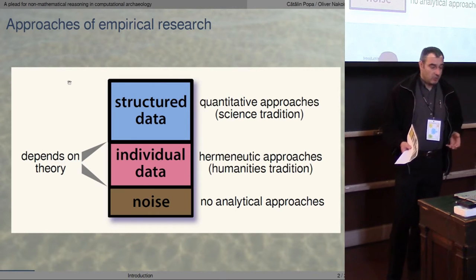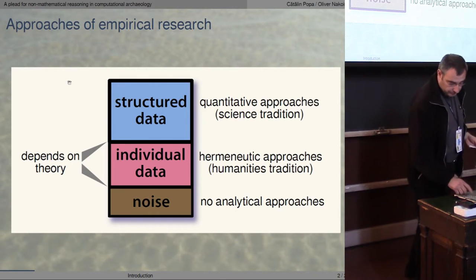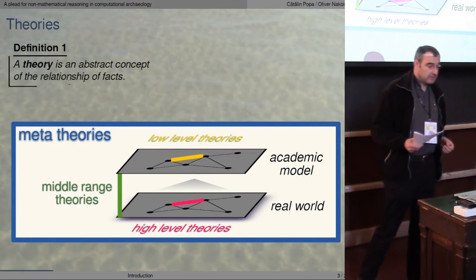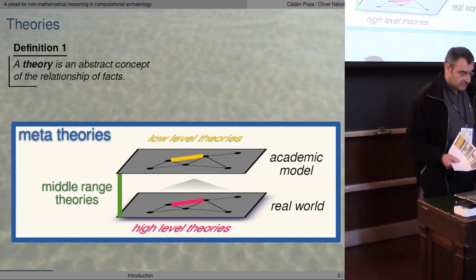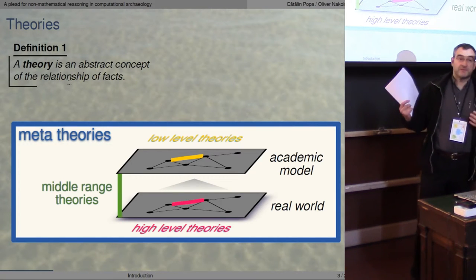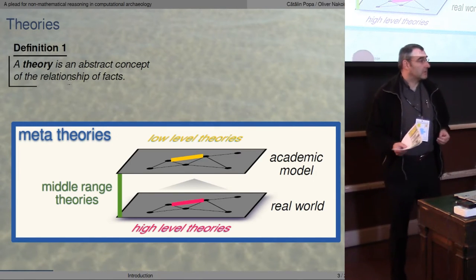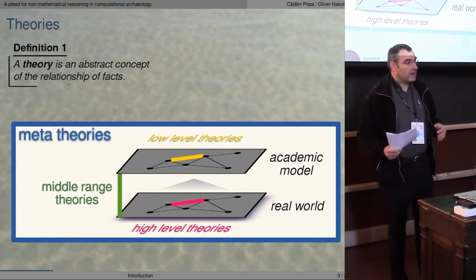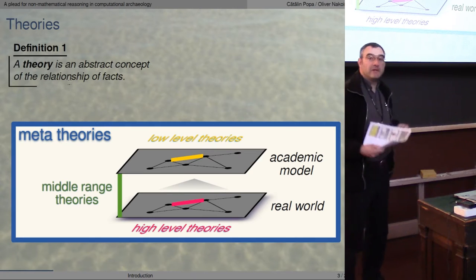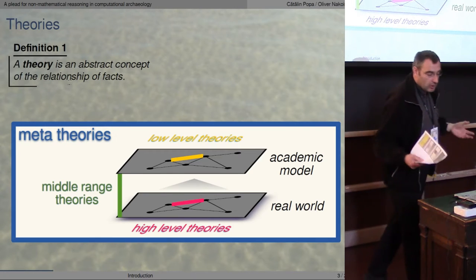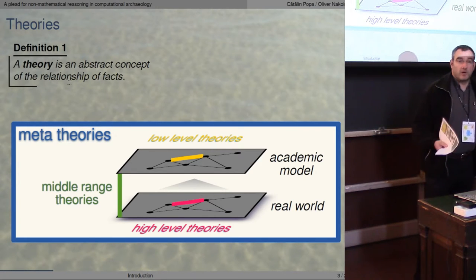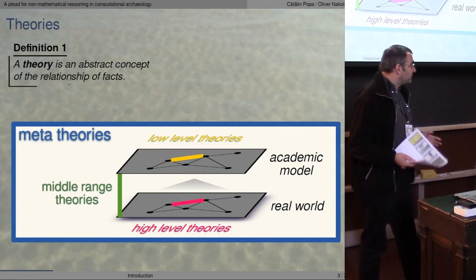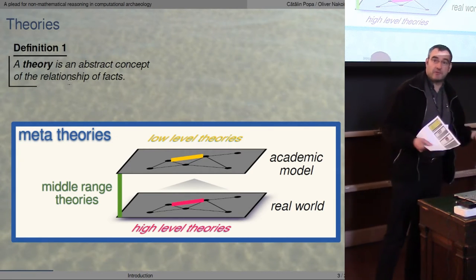First we have to discuss what theory is. A theory is an abstract concept of the relationship of facts. Here we have a very simple model of a research process. Below we have the real world, and we are mapping the real world into an academic model. This is very simple but sufficient for explaining the different types of theories.